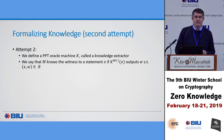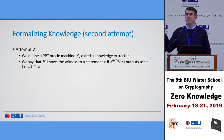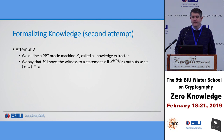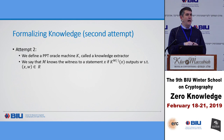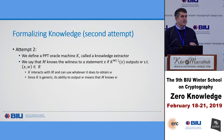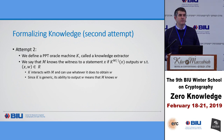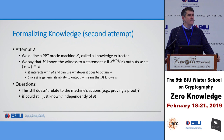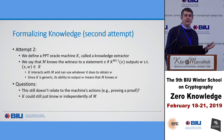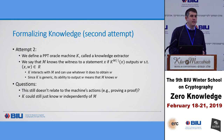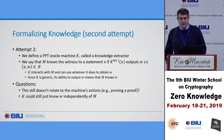Since K is generic, knowledge of W by K translates to knowledge of W by M. But we're still not quite there because it doesn't relate to the machine's actions. K could still know W independently of M. How do we stop the situation where K just happens to know W on its own with nothing to do with how it's interacting with M? Here's a third attempt: same oracle machine K called the knowledge extractor. Now we want to connect what K does to a prover P star in some proof.